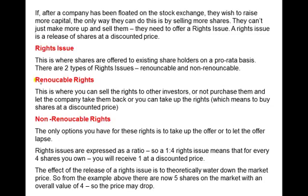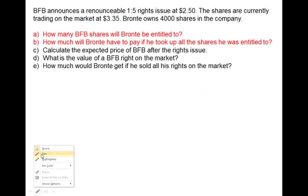There are two types of rights issues. Renounceable rights are the most flexible — you can sell the rights to someone else, not purchase them and let the company take them back, or take up the rights, meaning actually buy them. Non-renounceable rights give you only two options: take them up (buy them) or let them lapse, meaning the company takes them back. Renounceable rights give shareholders the most options.